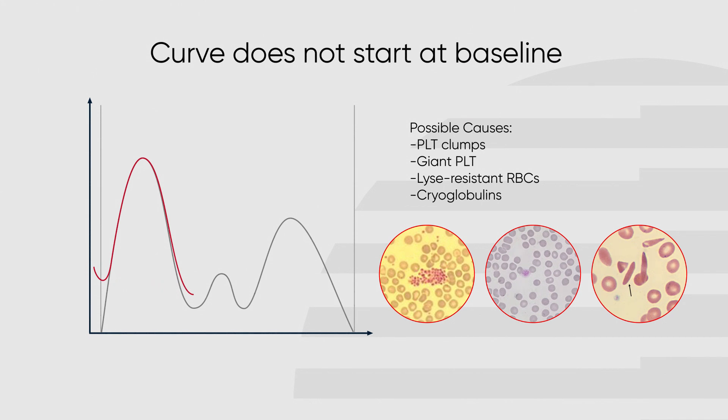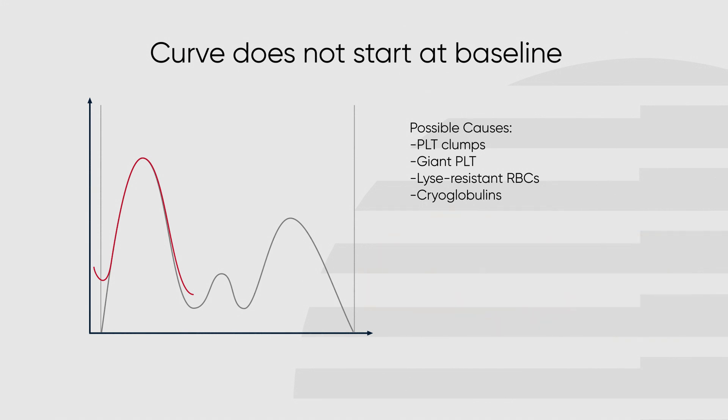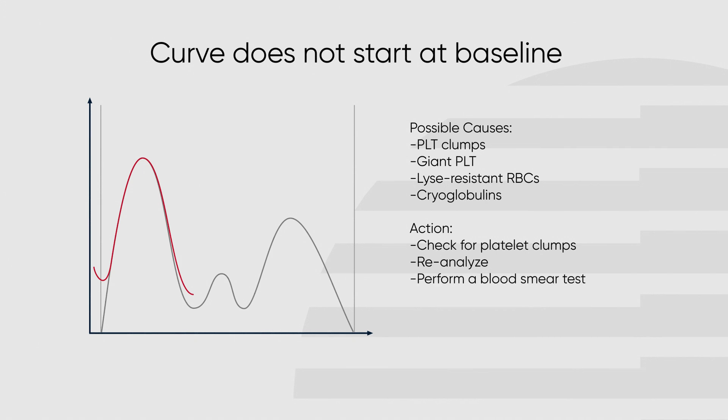This may also cause a falsely elevated white blood cell count. Check for platelet clumps; if they are found, take a new sample and analyze again. If no platelet clumps are found, proceed to manual smear.